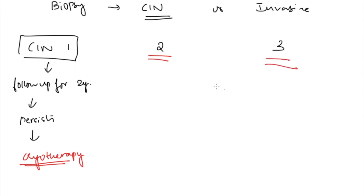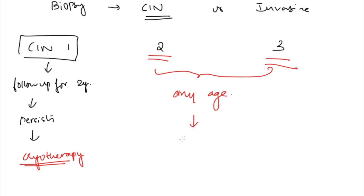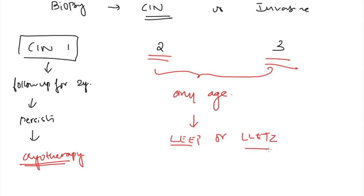For CIN 2 and CIN 3, the procedure of choice at any age is LEEP or LLETZ. This is extremely important - LEEP or LLETZ is the procedure of choice for CIN 2 and CIN 3 irrespective of the patient's age.